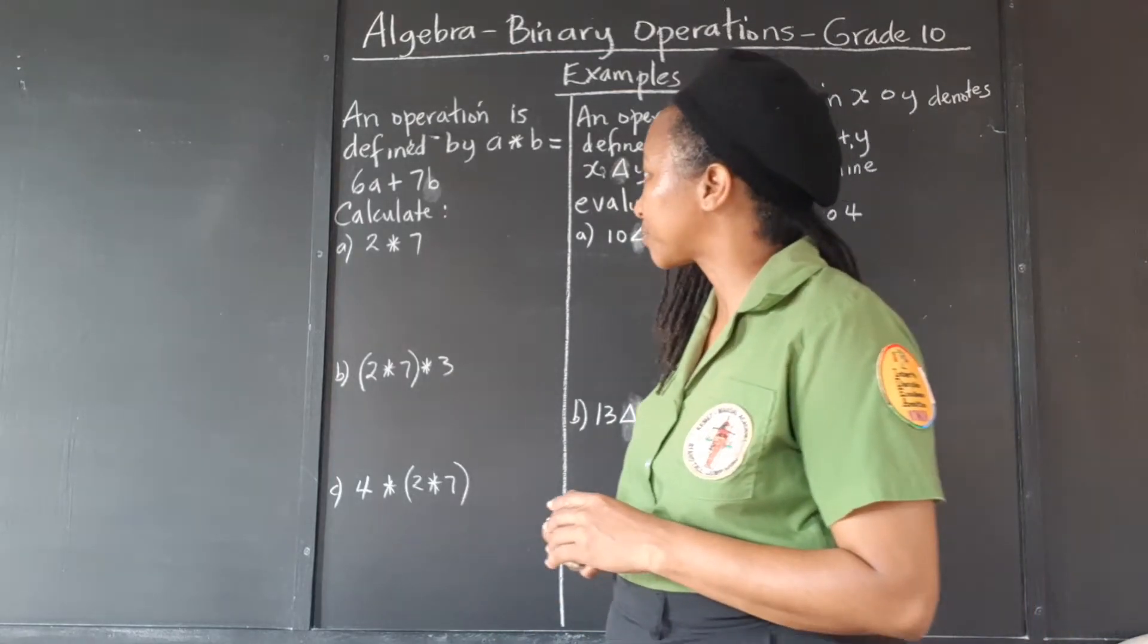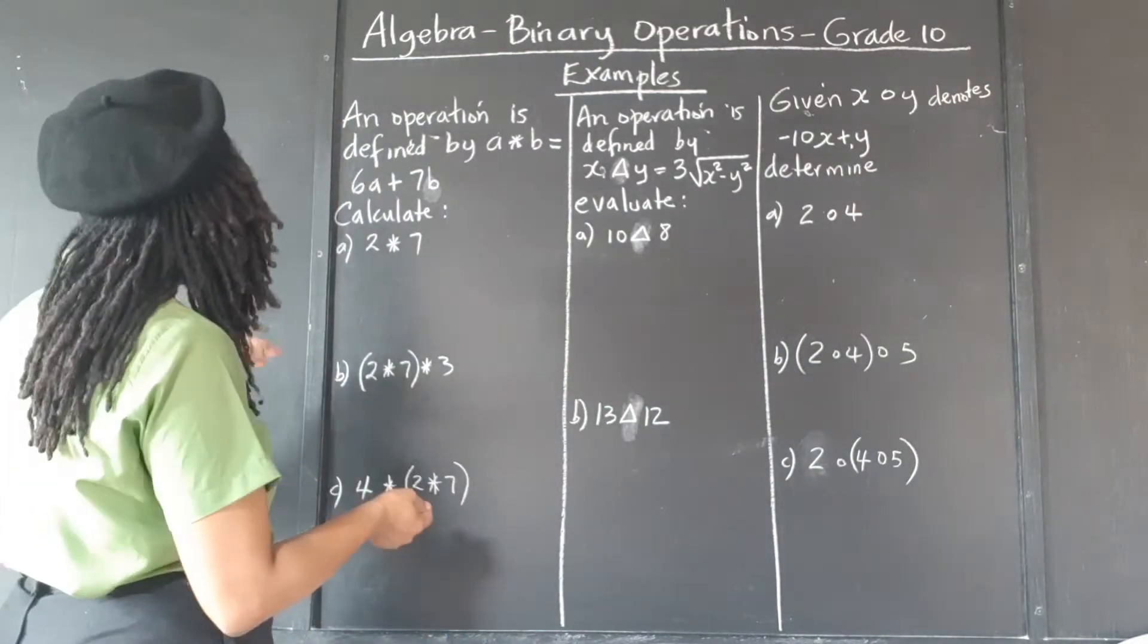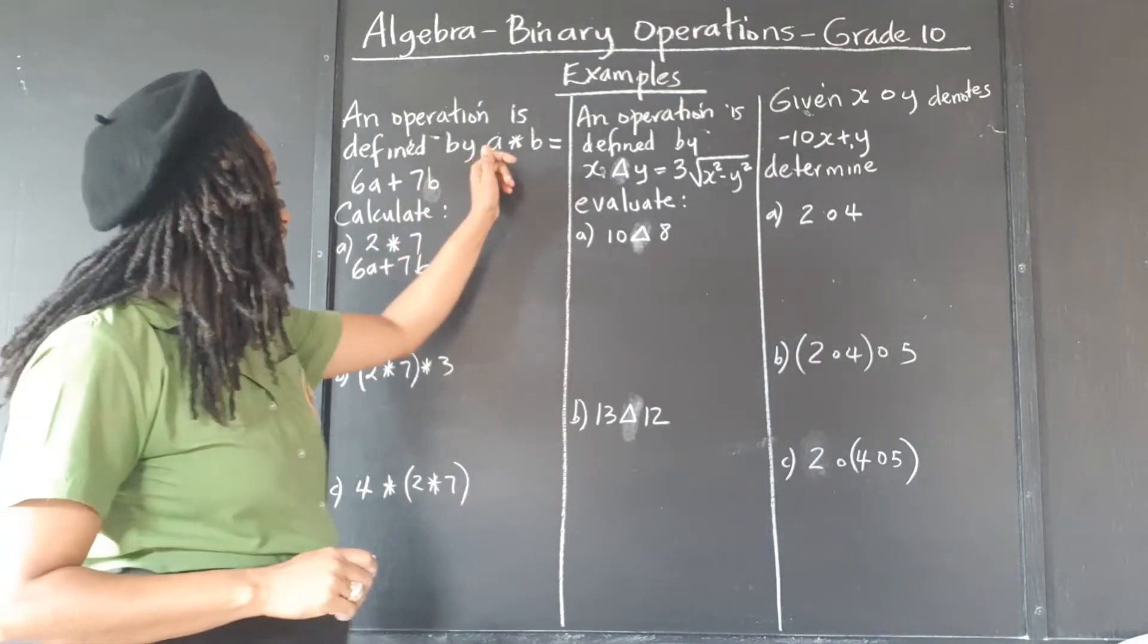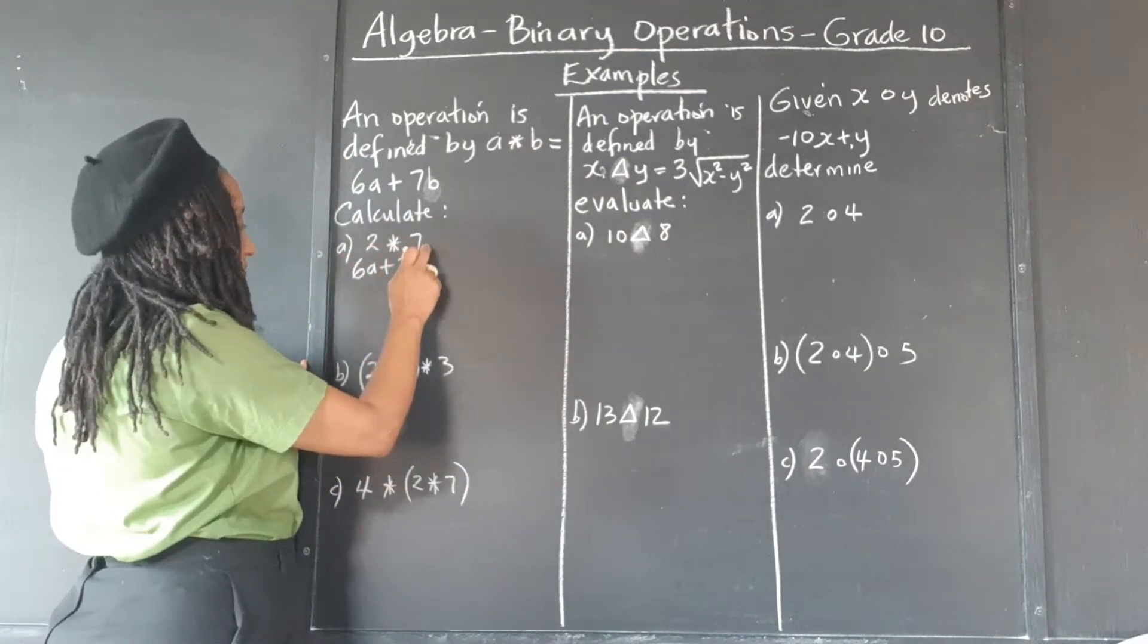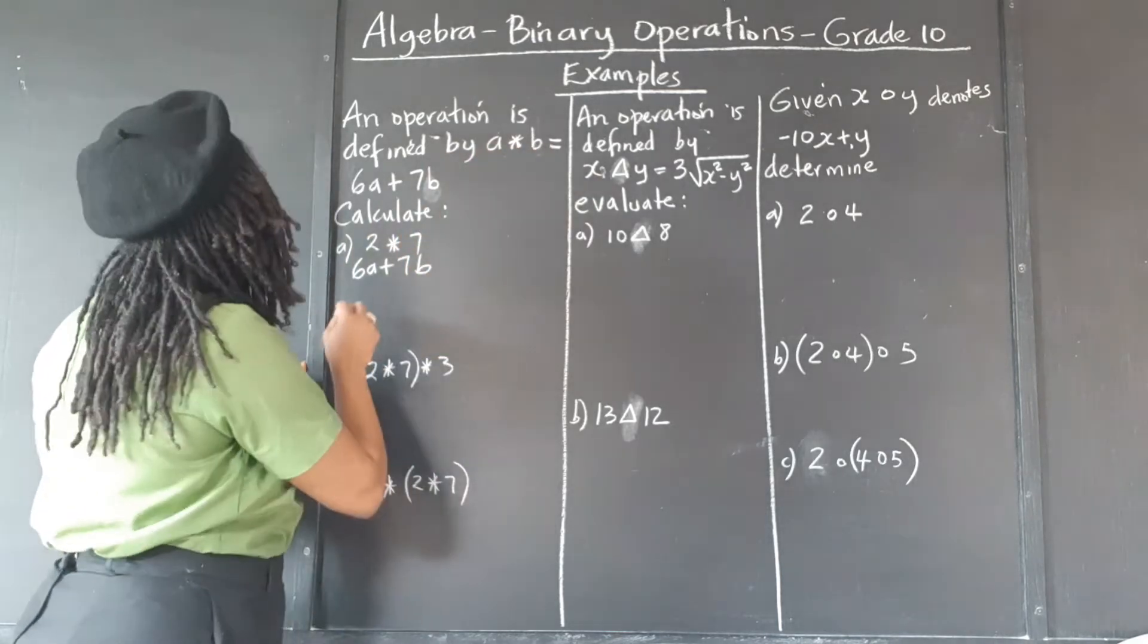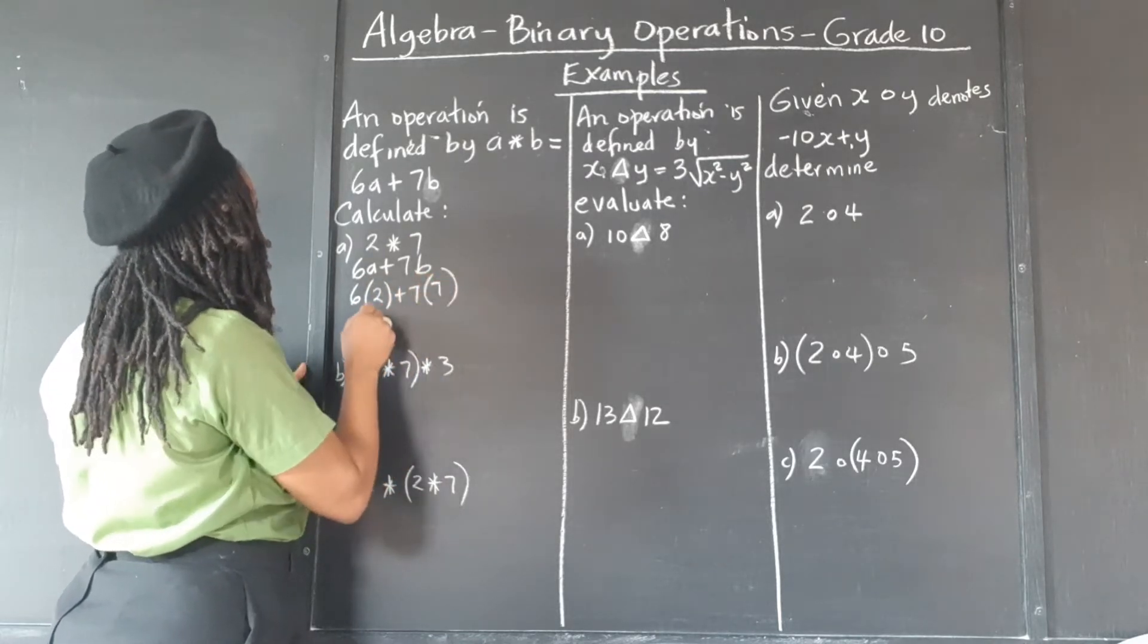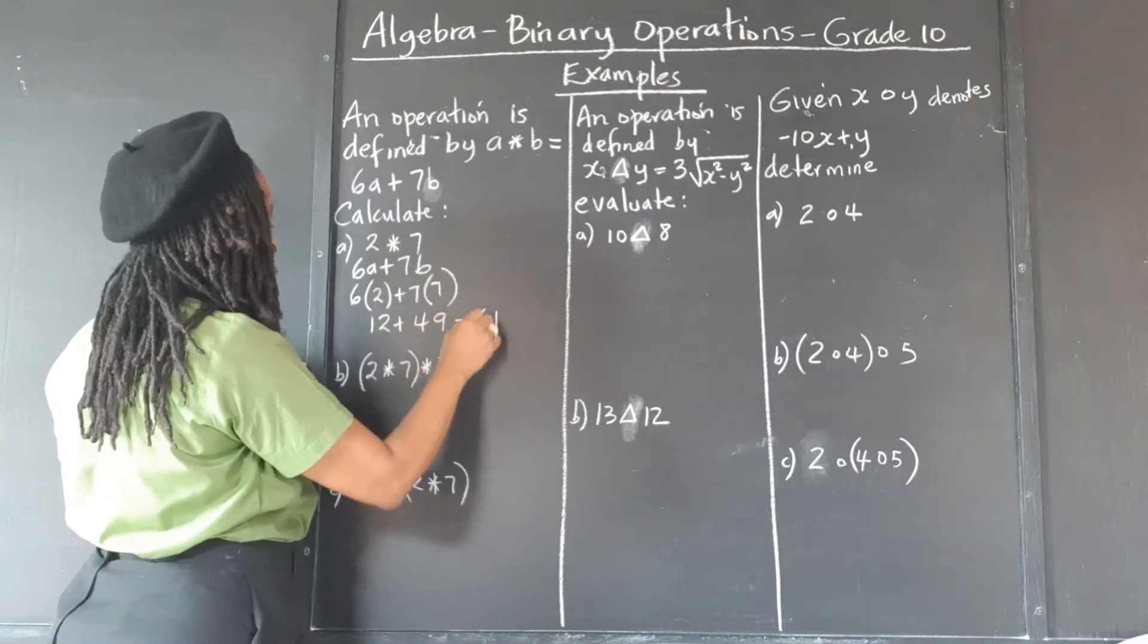So we're going to put our brackets as usual for the substitution. So 6a plus 7b, since the a is given first and then the b, and the 2 is given first and then the 7, so we're substituting 2 for a, 7 for b. So it will be 6 times 2 plus 7 times 7, and that's 12 plus 49, and that's 61.